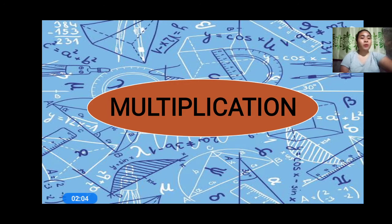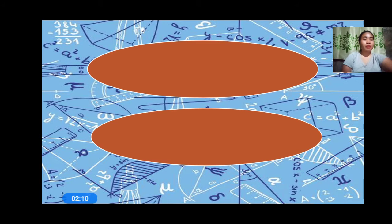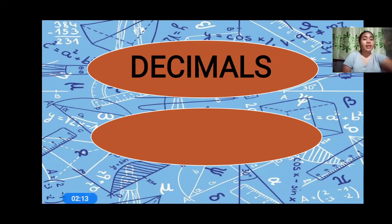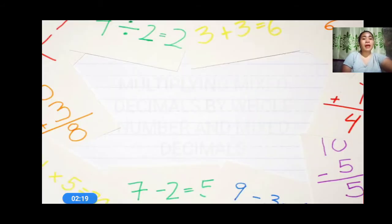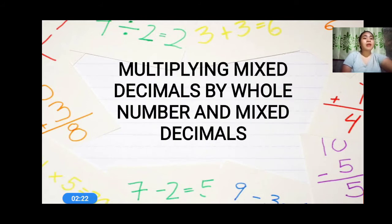So what numbers did we multiply? Very good — decimal numbers and whole numbers. Today, we are going to talk about multiplying mixed decimals by whole numbers and mixed decimals. So first, I'm going to show you a video. Are you ready to listen? Let us watch this video.